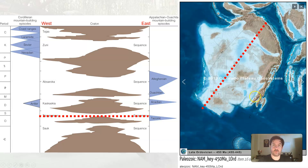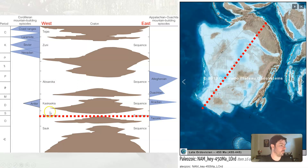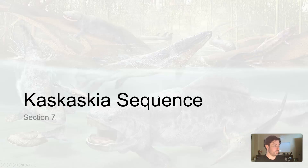This is the first orogenic event in building the Appalachian Mountains — the first mobile belt building event. So now we have the Sauk sequence, the Tippecanoe sequence, and the beginnings of the Appalachians being created on what is now the east coast — which at the time of Laurentia was actually the south coast. So let's pause here, and when we come back we're going to talk about the Kaskaskia and Absaroka sequences, and then we'll go back into some of these mountain building mobile belt events. We'll see you back here in just a second.